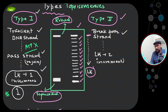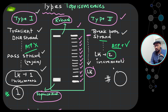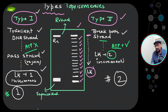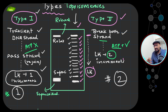Type 2 topoisomerase introduces a double-strand break in both strands and requires ATP — it is a highly energy-intensive process. The change in linking number for Type 2 is an increment of two. As you can see on the gel, when you treat DNA with topoisomerases you get multiple bands on agarose gel electrophoresis, corresponding to different conformations due to incremental linking number changes.